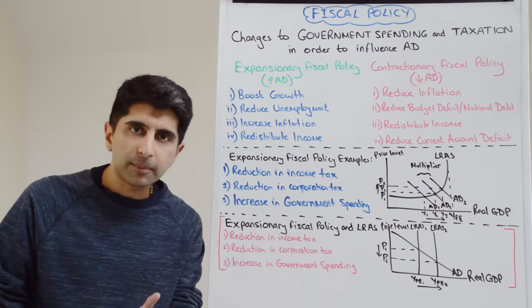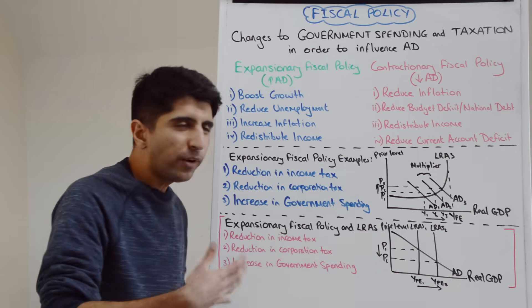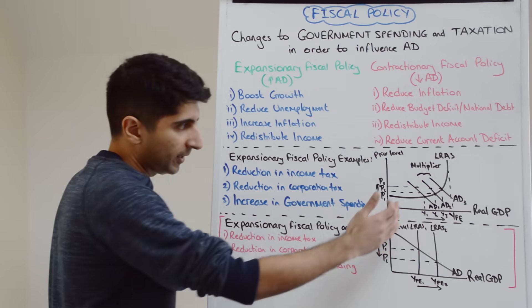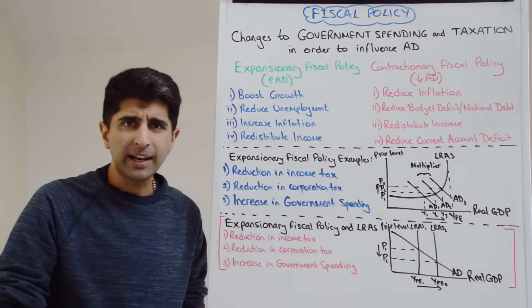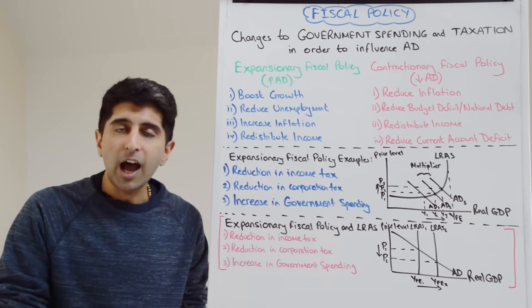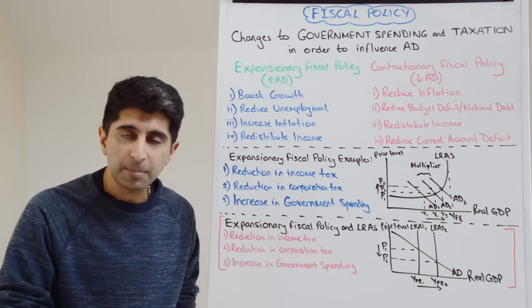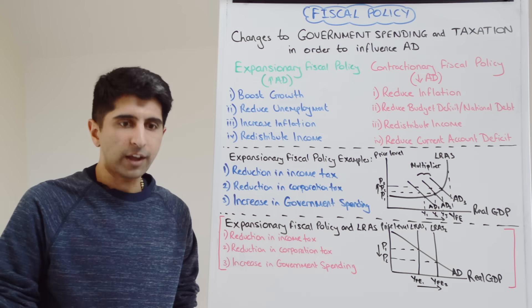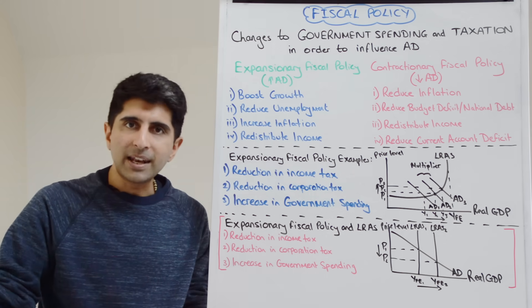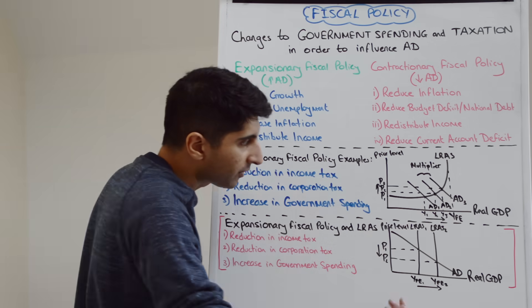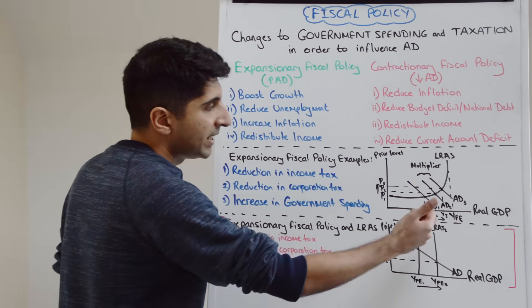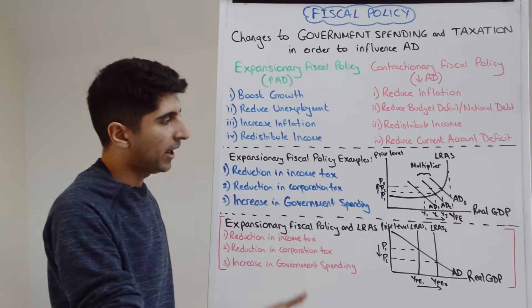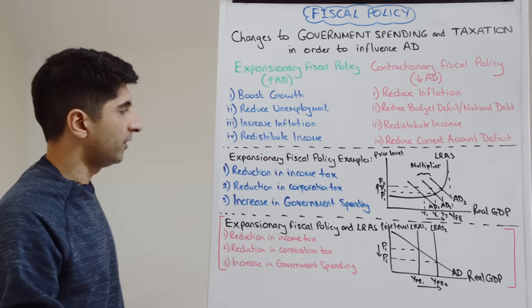Can you also see that I've added on the multiplier effect? That's something you can always talk about when we bring in the idea of expansionary fiscal policy. The notion is that an increase in aggregate demand will lead to higher incomes in the economy, that will lead to more spending, which is more AD and more incomes and more spending — a virtuous cycle of spending and income. Therefore the end result is an even higher increase in AD and economic growth at Y3 as opposed to Y2. So we can link the multiplier to our expansionary fiscal policies.